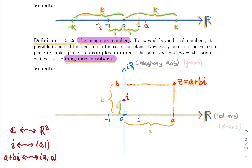When studying points in the plane as complex numbers, the x-axis is called the real axis. The y-axis, which we denote by ℝi, is called the imaginary axis. You can think of the imaginary axis as the y-axis and the real axis as the x-axis — it's really just different notation and terminology.